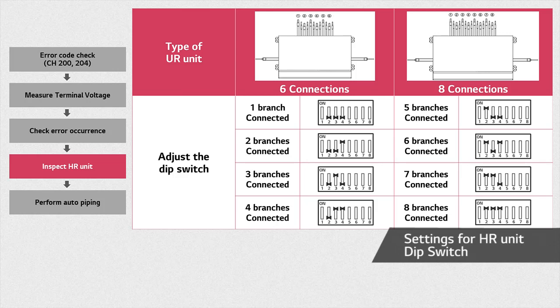Unlike 2, 3, and 4 connection models, in the case of 6 and 8 connection models, switches number 2, 3, and 4 are used. According to the number of connected units, you can adjust the DIP switch referring to this picture. Since an error will occur if this setting is not properly done, make sure you adjust the DIP switch accordingly.